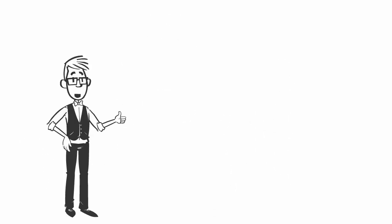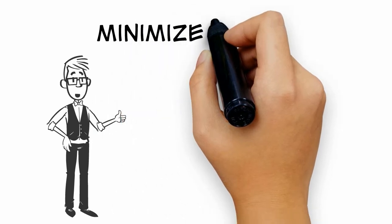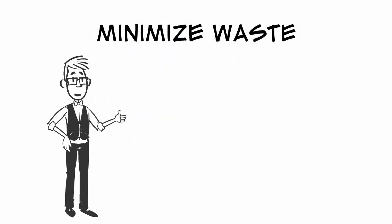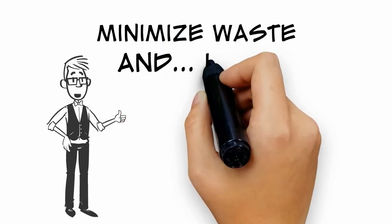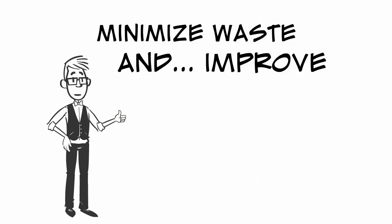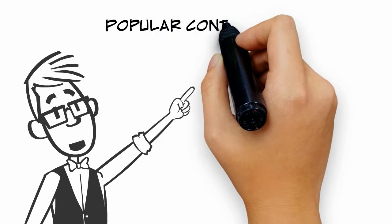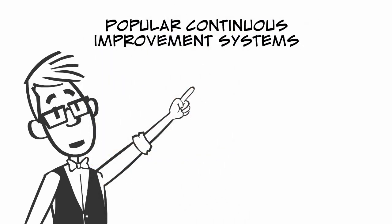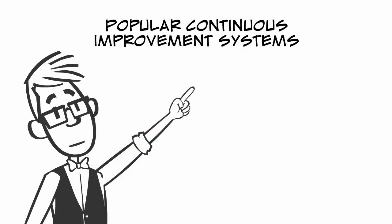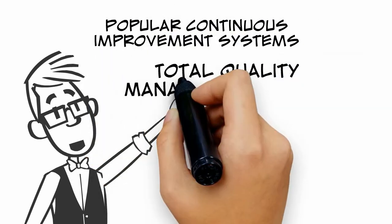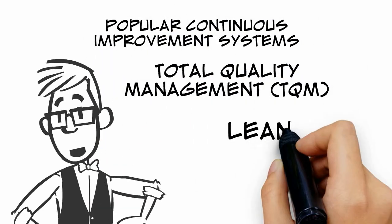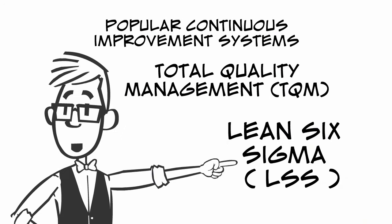Control methods aren't just about minimizing waste, but also about continuous improvement. Popular continuous improvement systems include total quality management and Lean Six Sigma.